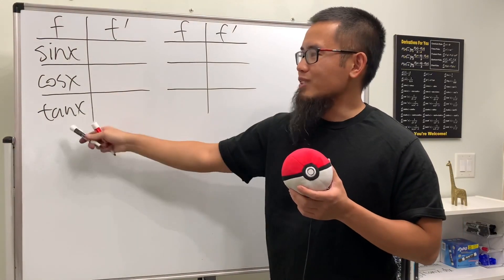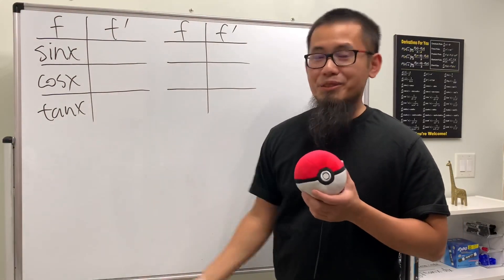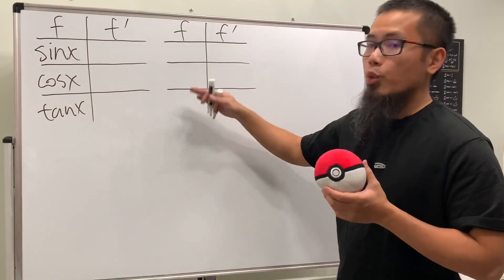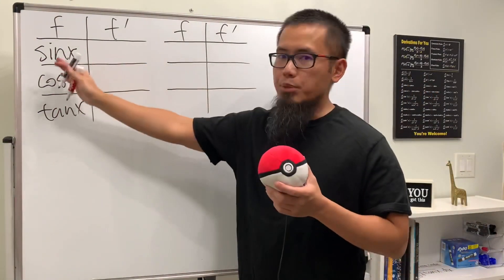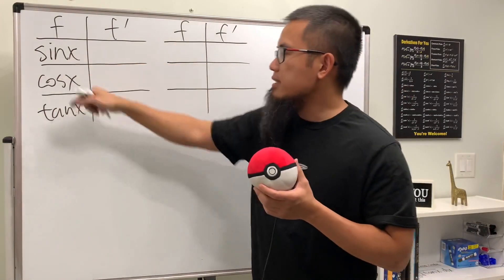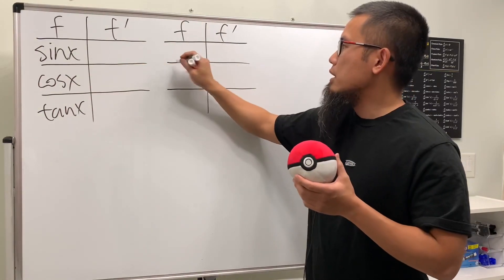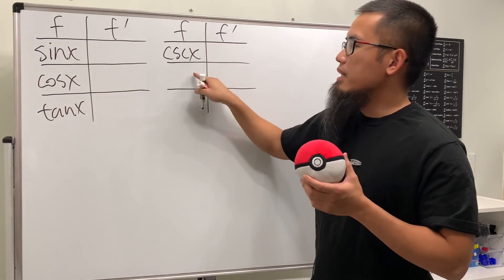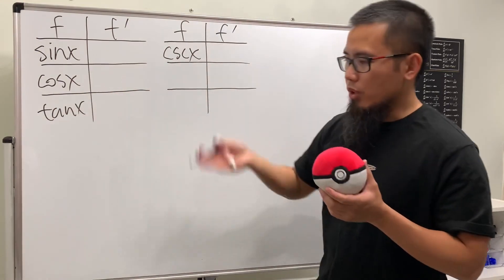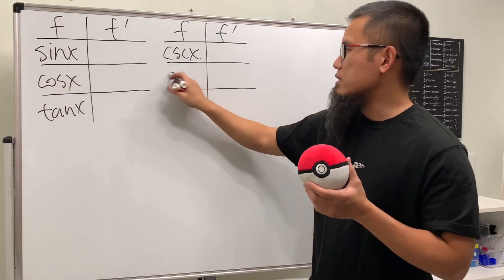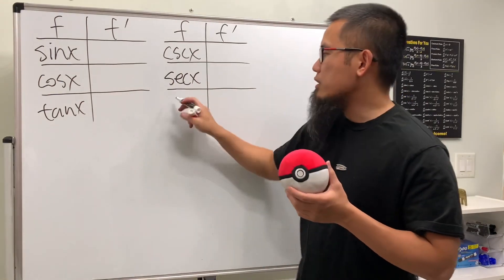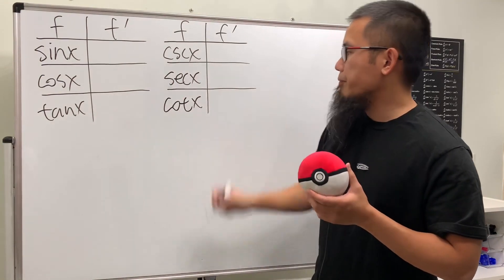Sine over cosine gives us tangent — that's pretty cool. And in the second table we'll put down the reciprocals. So this is the reciprocal of sine x, which is called cosecant x. This is the reciprocal of cosine x, which is secant x. And this is 1 over tangent x, which is called cotangent x.